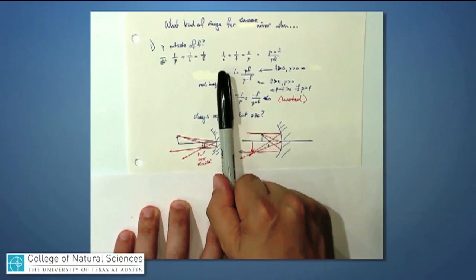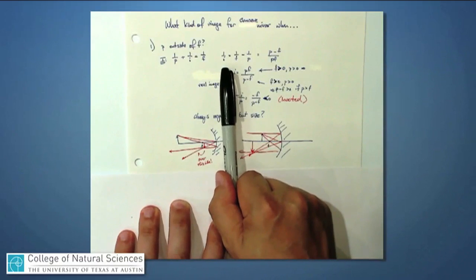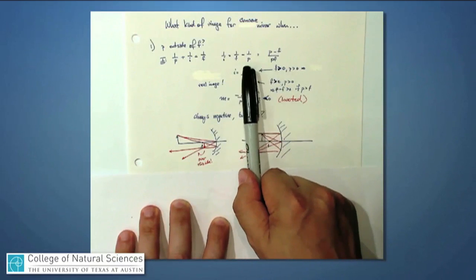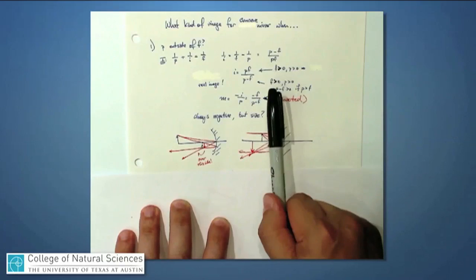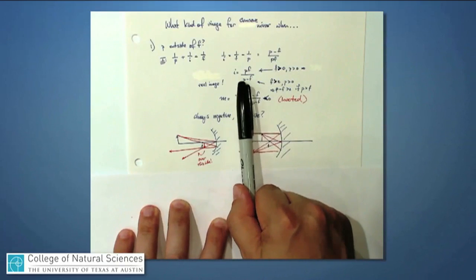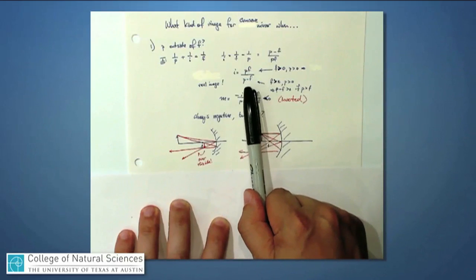We can solve for the image distance i, and generically we say 1 over i is equal to 1 over f minus 1 over p, or if I want to put this over a common denominator that's p minus f over pf, or i is pf over p minus f.